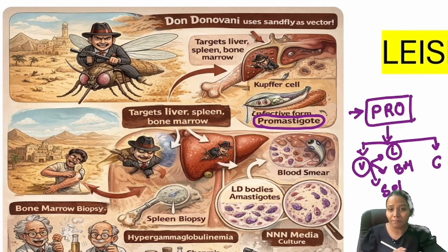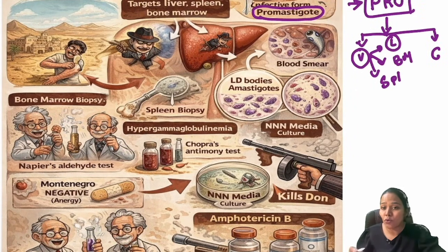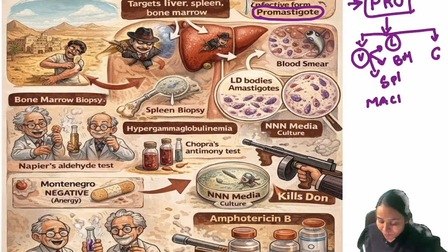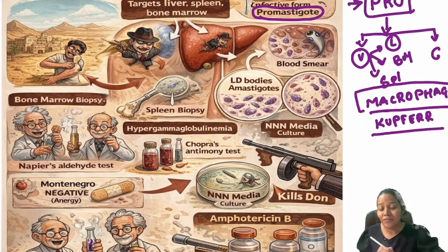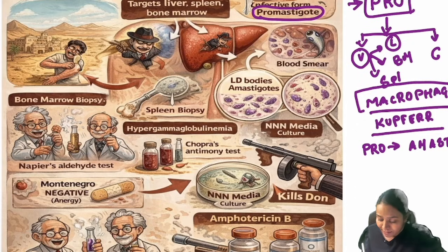Once injected inside, the organism goes to all these organs and enters the cells — specifically macrophage cells. The promastigote form enters the macrophages. In the liver, macrophages are called Kupffer cells. Once inside the cell, the promastigote converts to the amastigote form. The intracellular form is always amastigote — this is important to remember.